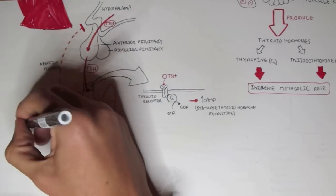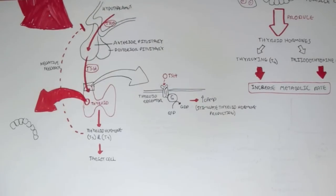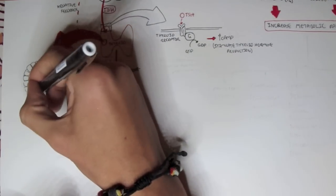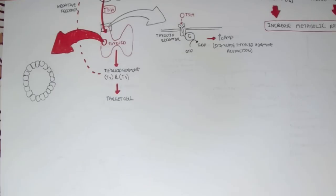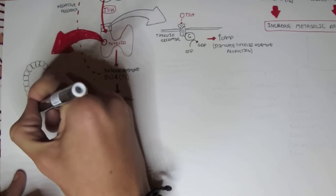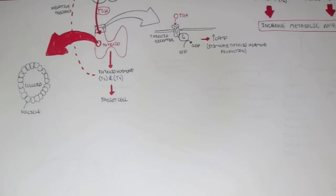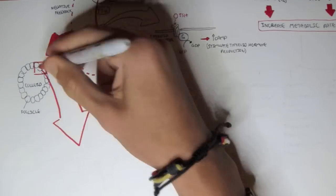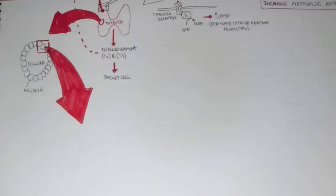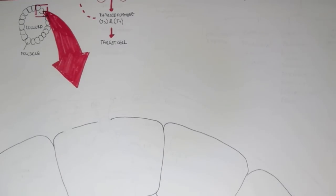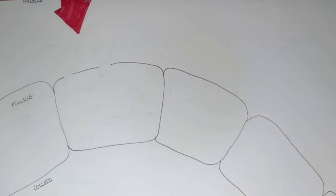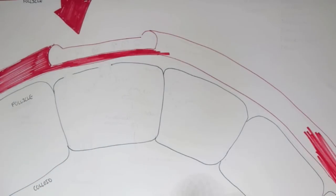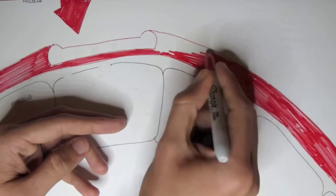Now let's investigate how these hormones are actually synthesized. To recap: the thyroid gland has lobules consisting of follicular cells which form circular-looking lobules with a lumen called the colloid. If we zoom into this particular section we will begin to investigate how thyroid hormones are synthesized. Here we have the follicular cells and the colloid inside, with blood vessels surrounding them.